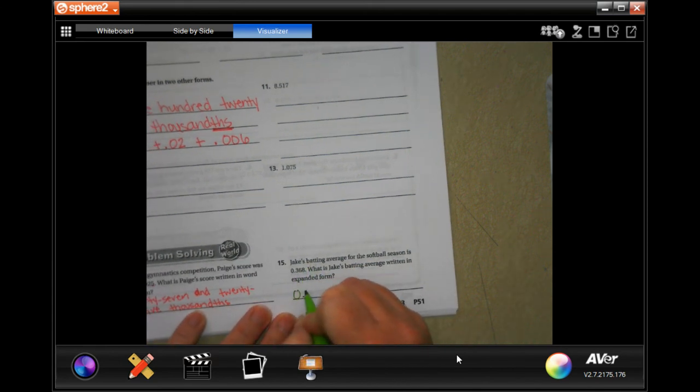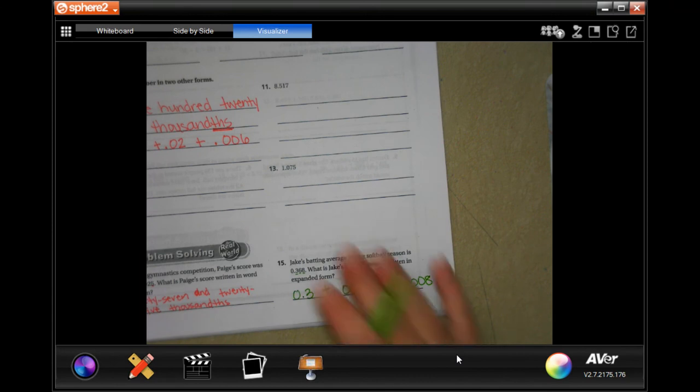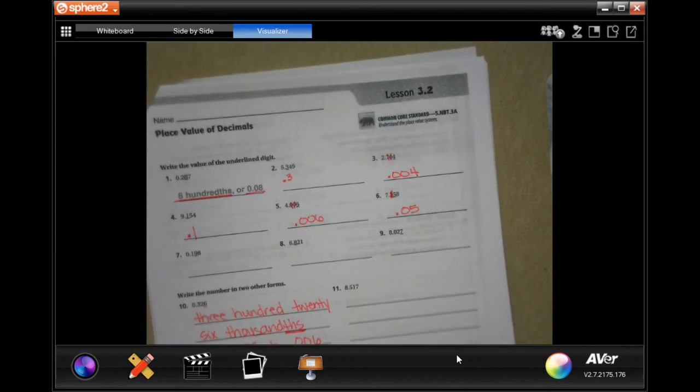So first we're going to have 0.3. We're going to add to that 0.06. That's our next one. We're going to add to that 0.008. Done.